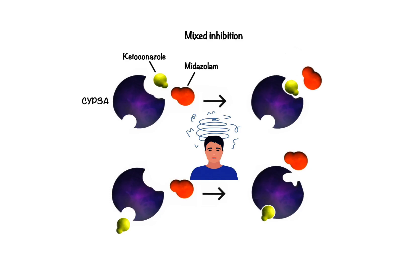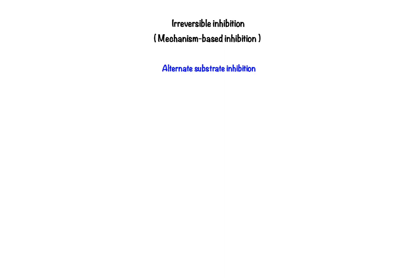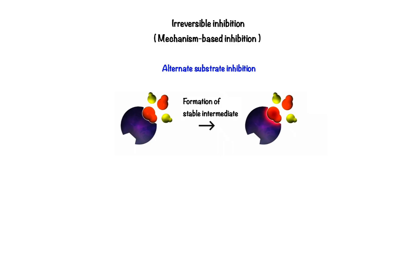Lastly, let's move on to irreversible inhibition, also known as mechanism-based inhibition. Irreversible inhibition can be classified into two types. The first type, called alternate substrate inhibition, occurs when a stable intermediate metabolite formed during the normal metabolic cycle forms covalent bonds at the active site. The stable intermediate enzyme complex is not easily broken by increasing substrate concentration. Since the enzyme structure remains otherwise unchanged, theoretically this reaction could be reversible with time. However, in in vivo conditions, with this metabolic intermediate complex being excessively stable, the metabolic intermediate cannot be displaced and the enzyme remains inaccessible for metabolism, so the reaction is technically irreversible. An example of this type of inhibition can be observed with clarithromycin, when the nitrosoalkane intermediate generated by N-demethylation forms covalent bonds with the active site of CYP3A4.